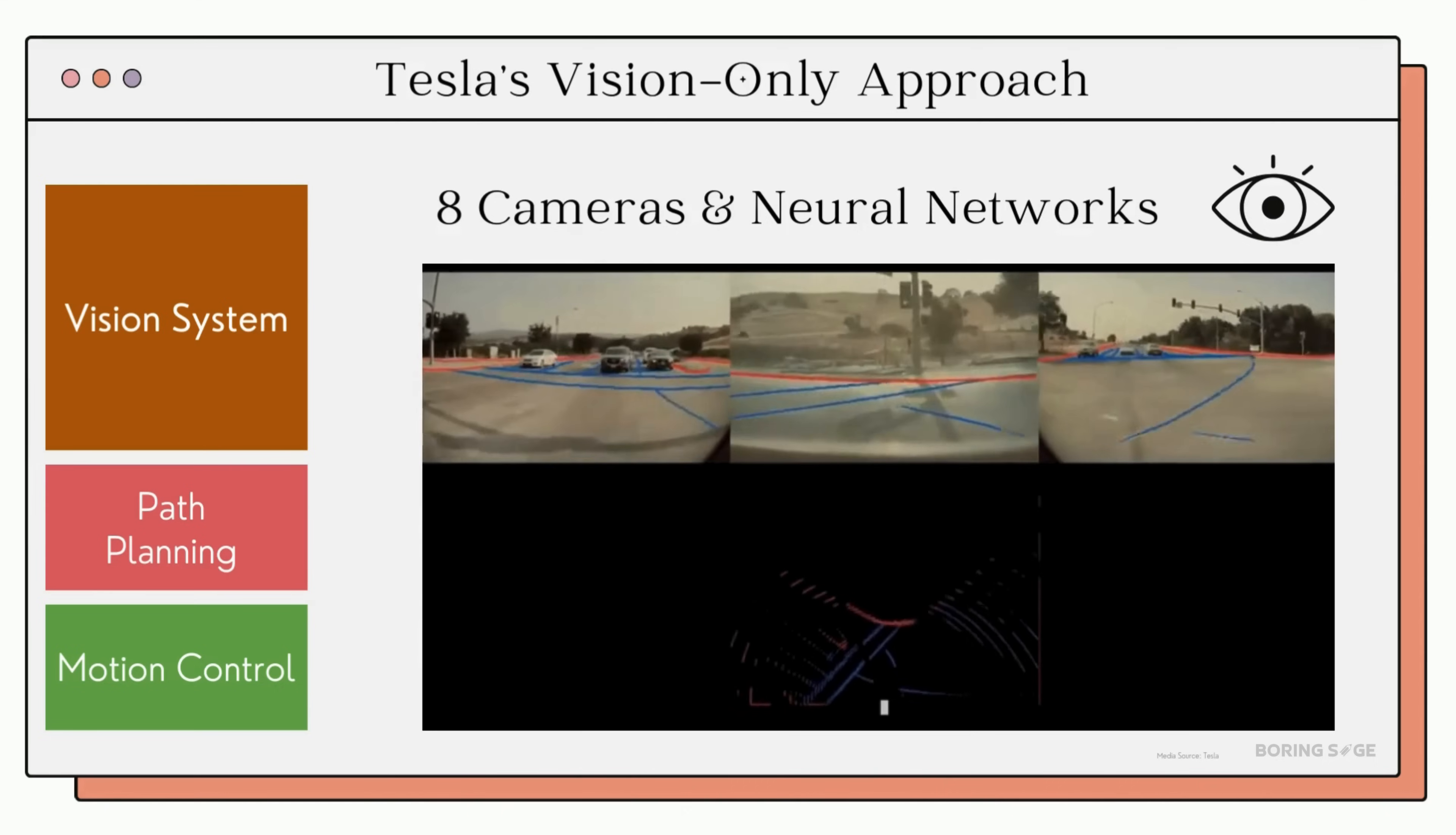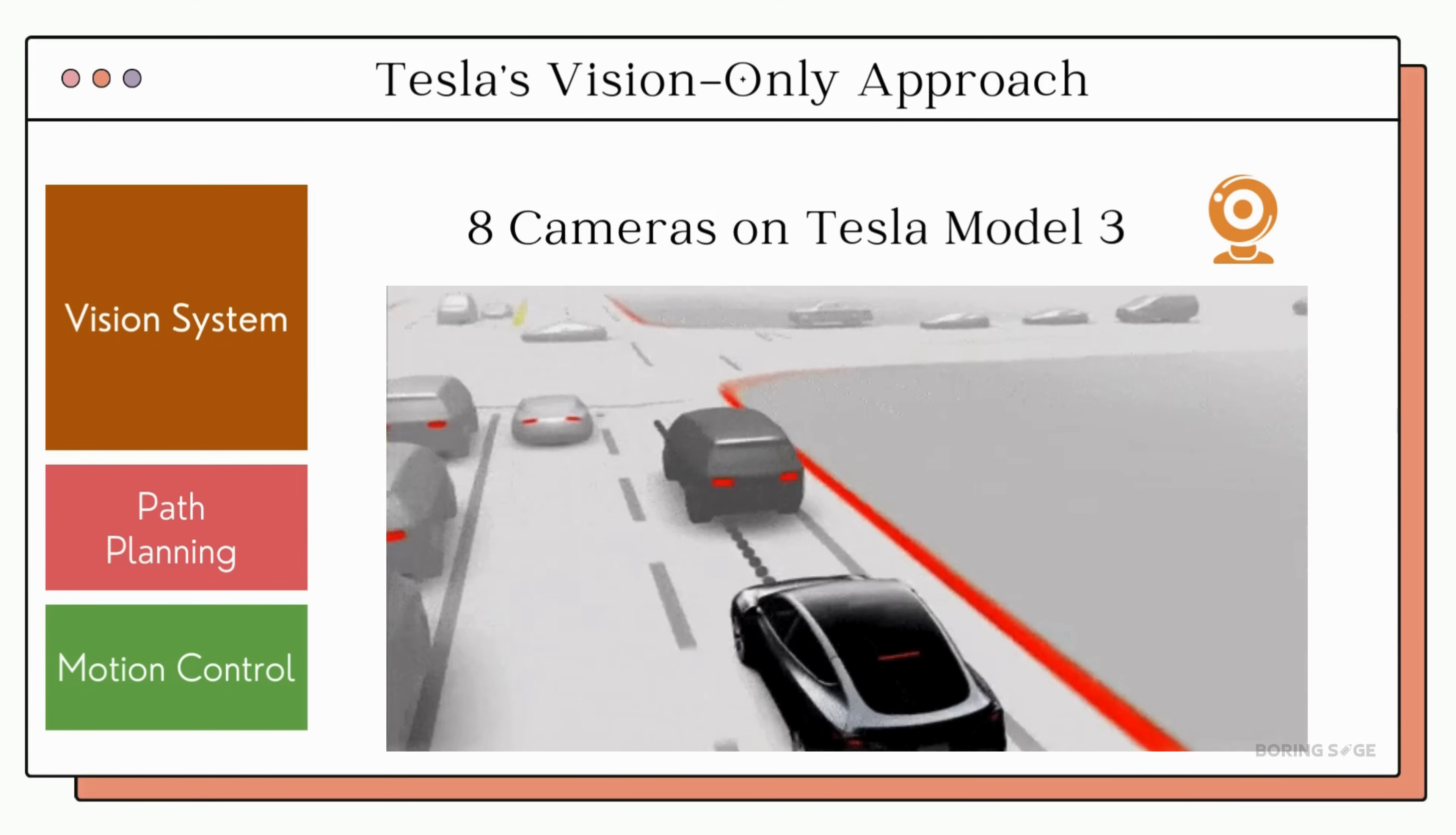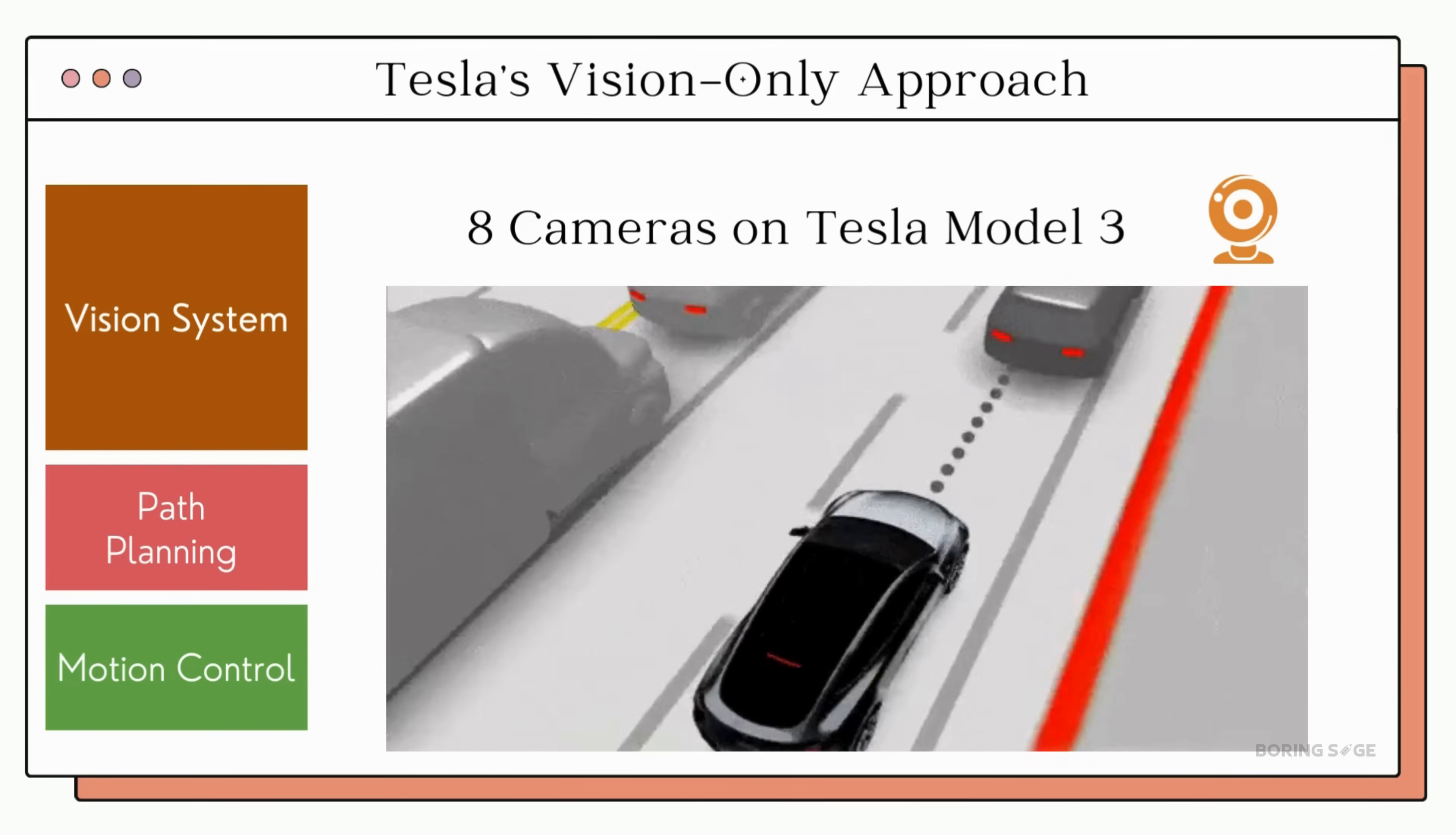Decoding Tesla's FSD begins with understanding its vision architecture. Let's take a closer look at this vision system. The Tesla vision system leverages eight high-resolution cameras installed around the vehicle to create a fully 360-degree view of the environment. These cameras act like the car's eyes and gather data continuously.